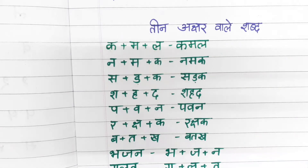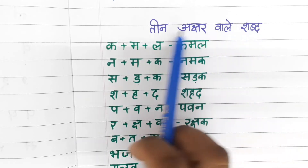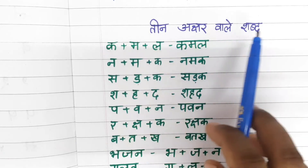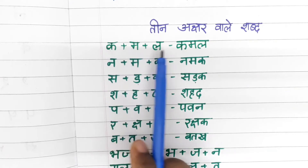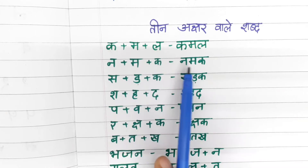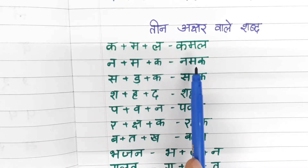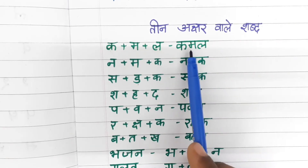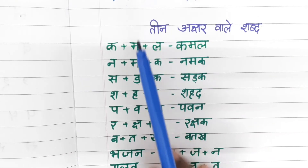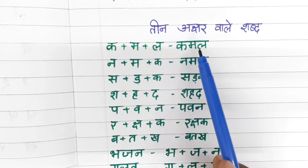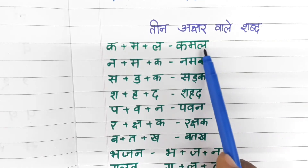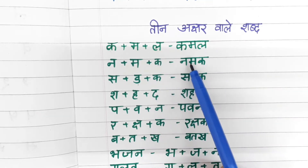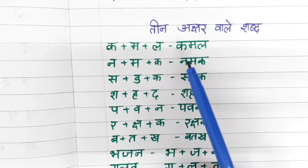Now we will go for three-letter words — teen akshar wale shabd. Ka plus ma plus la is kamal. Na plus ma plus ka is namak. In three-letter words, we do not make a half sound on the second letter like in two-letter words. The third letter will have a little half sound. So we say kamal, not kamala. Some students read namaka or kamala — that creates problems.